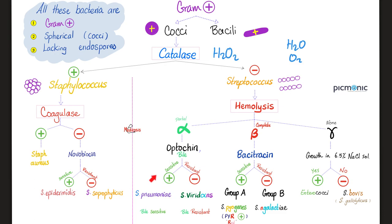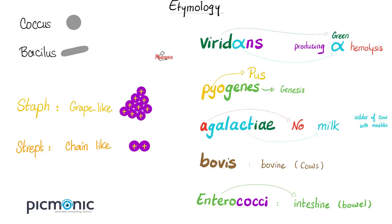To recap: Streptococcus pneumoniae is gram-positive (purple), coccus, catalase negative. It's a Streptococcus, so it's arranged in chains — usually short chains, or just double cocci (diplococci). It's alpha-hemolytic, sensitive to bile, and sensitive to optochin. Streptococcus means chain-like, and pneumoniae means it can cause pneumonia.